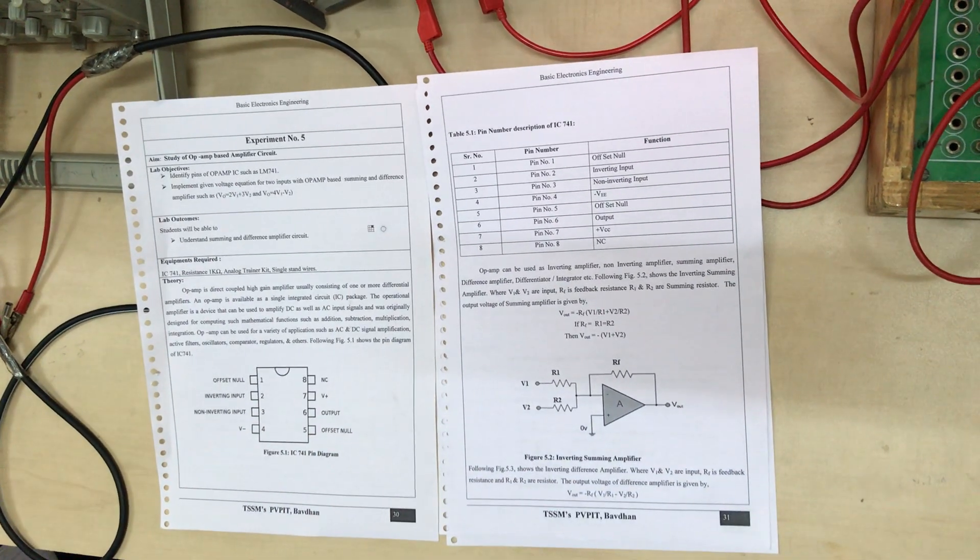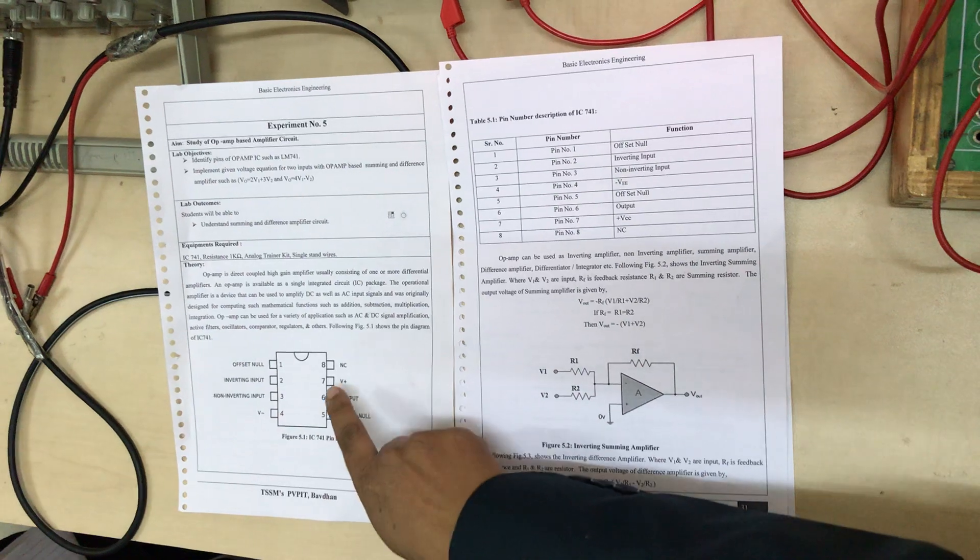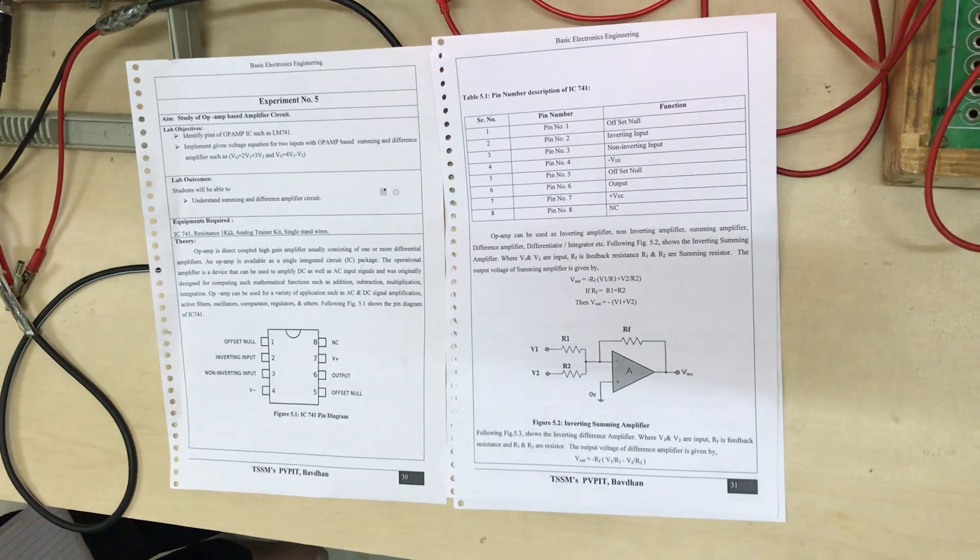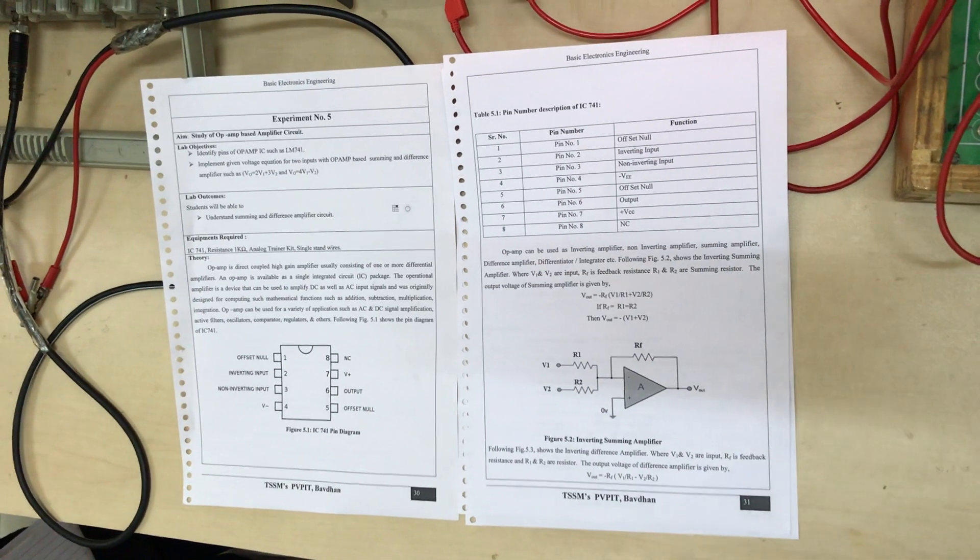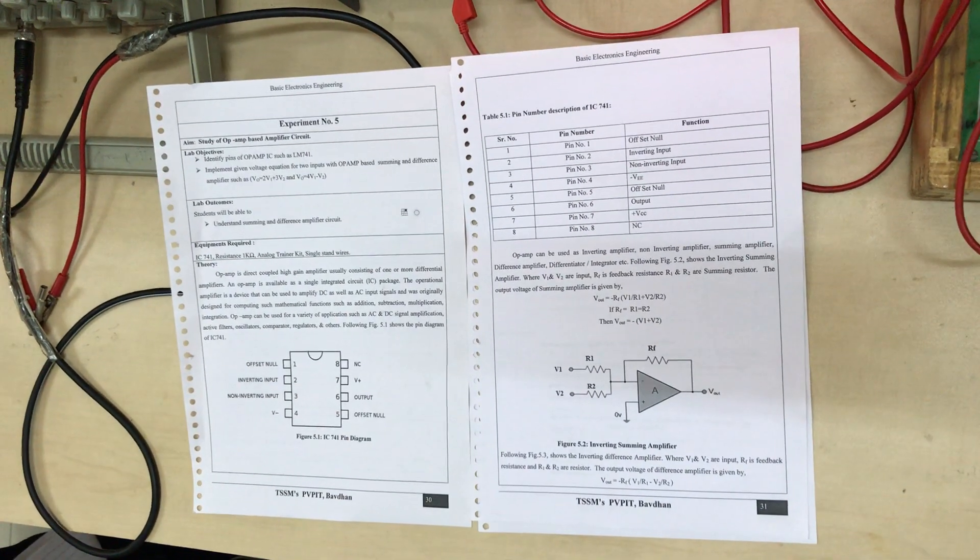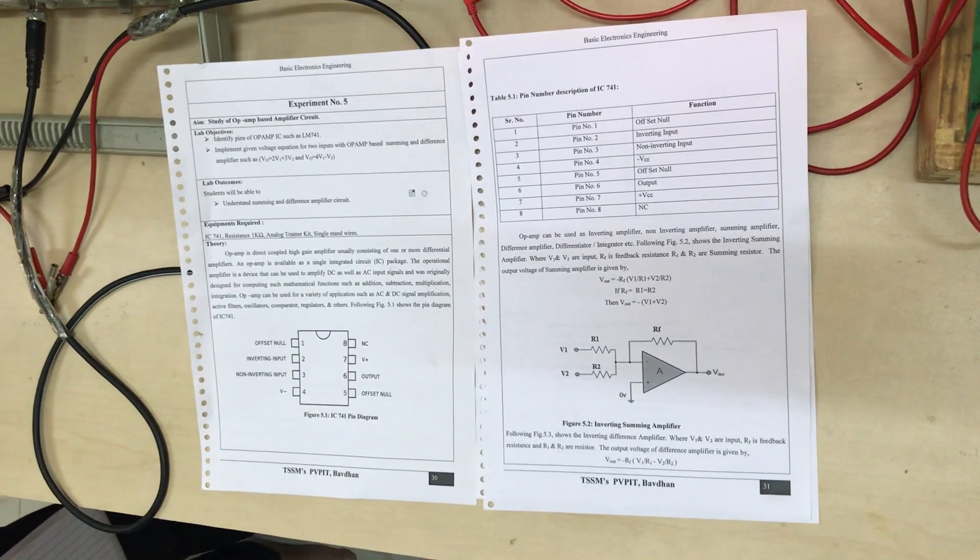pin number 3 non-inverting input, pin number 4 that is negative supply minus VCC, and pin number 7 that is plus VCC. Pin number 6 is output. We are using only these 5 pins here and these extra pins are not connected.